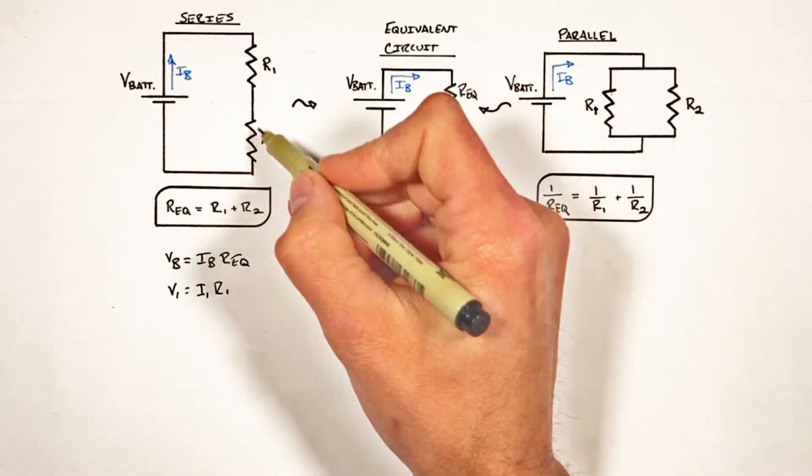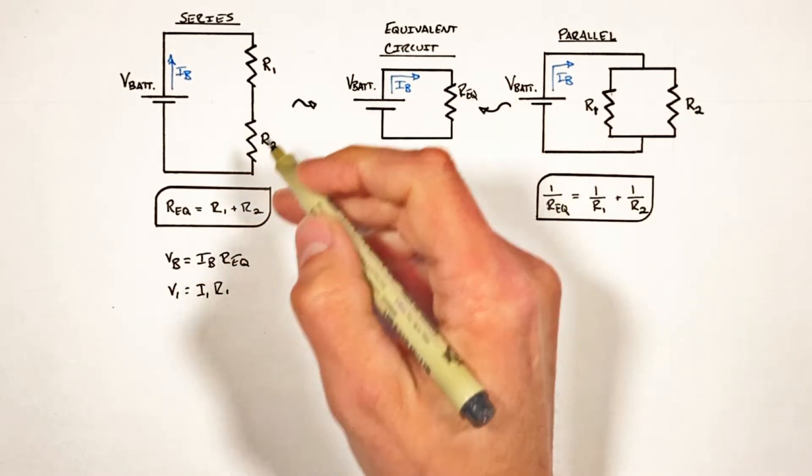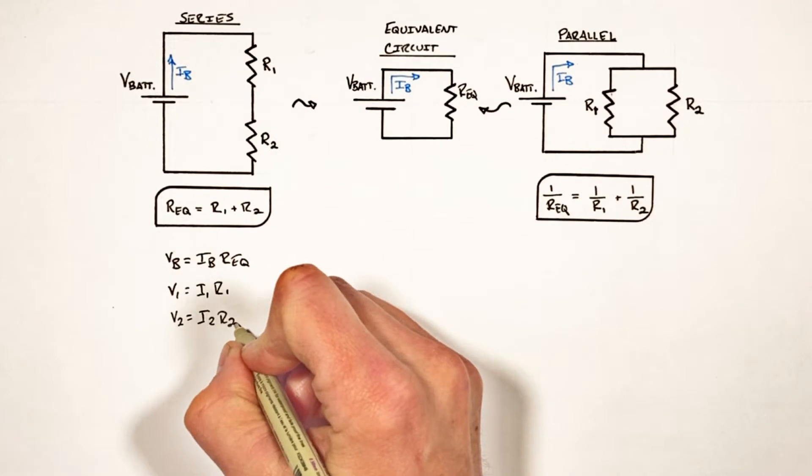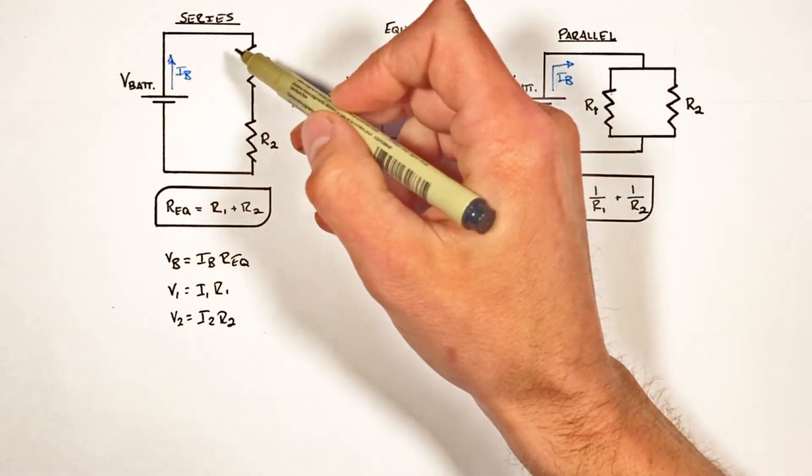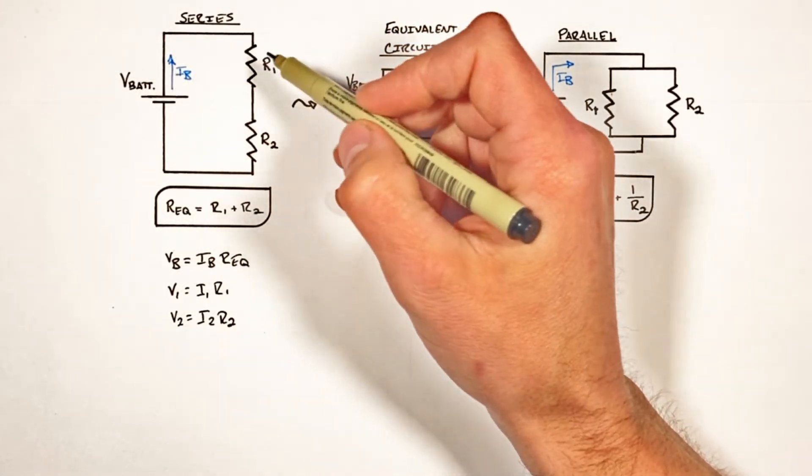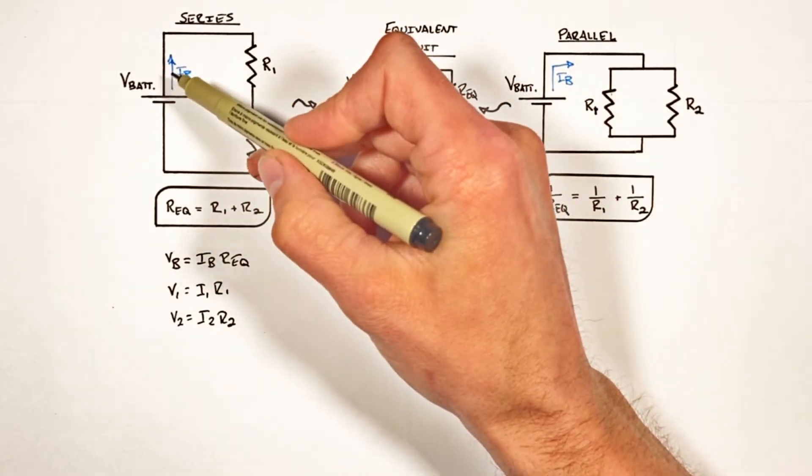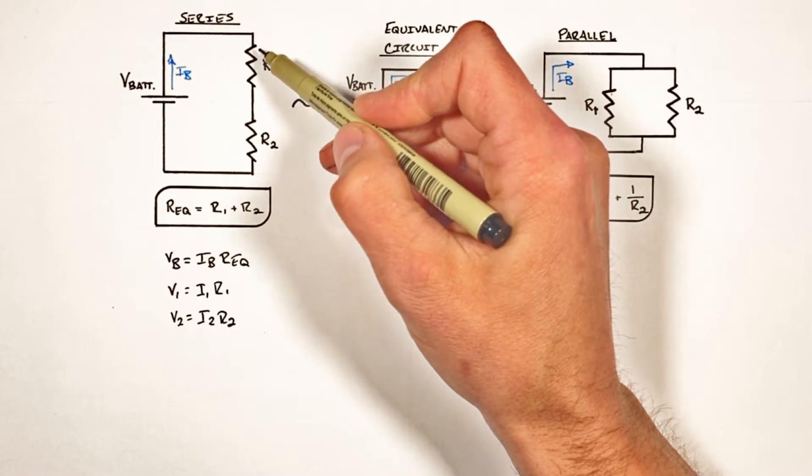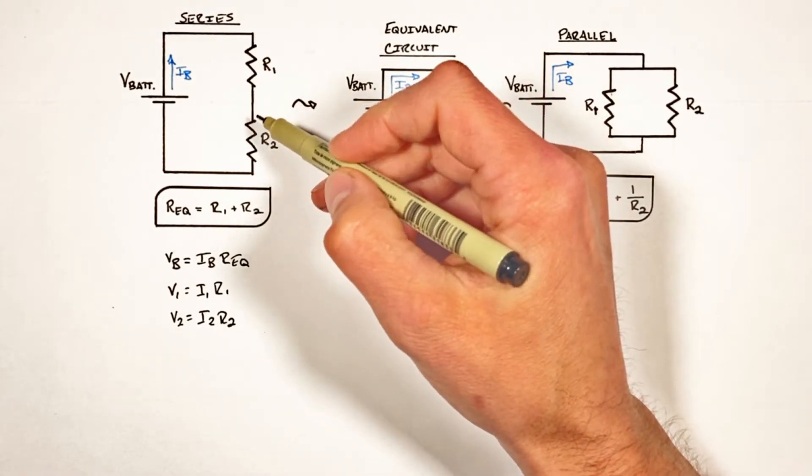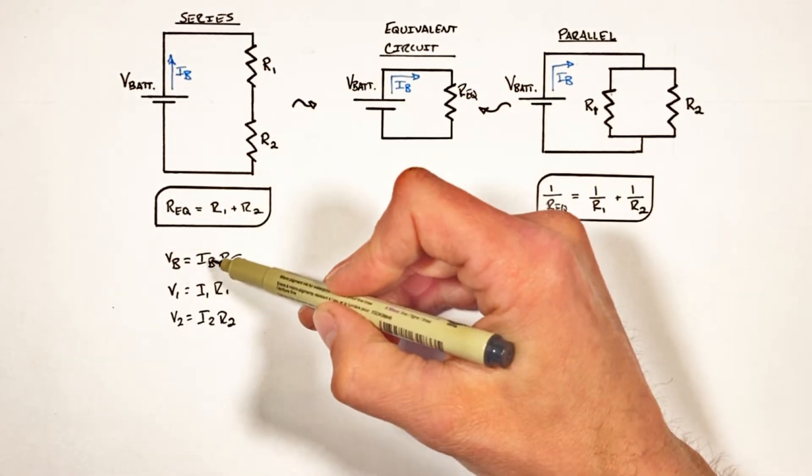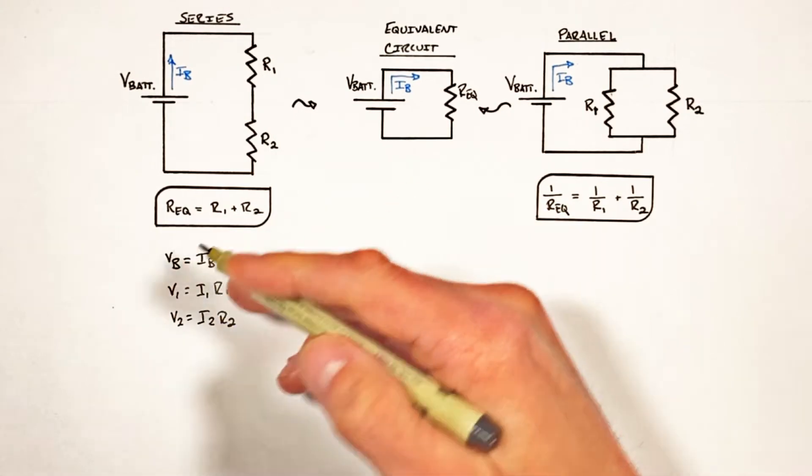And the same thing holds true for the second resistor. Now the whole point behind a series circuit is that there's only one pathway for the current to travel along. You'll see the wire never splits, which means all the current that comes out of the battery also must pass through this resistor as well as this resistor. That means the current at all points in the circuit is the same.